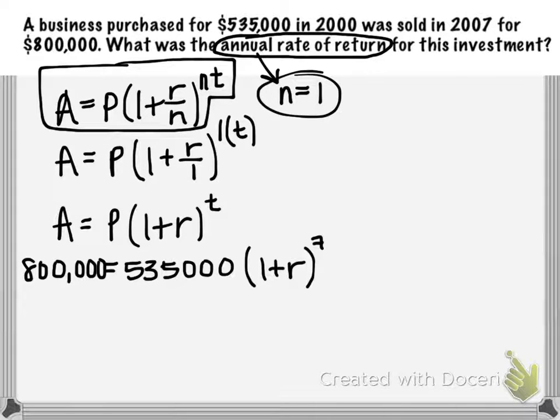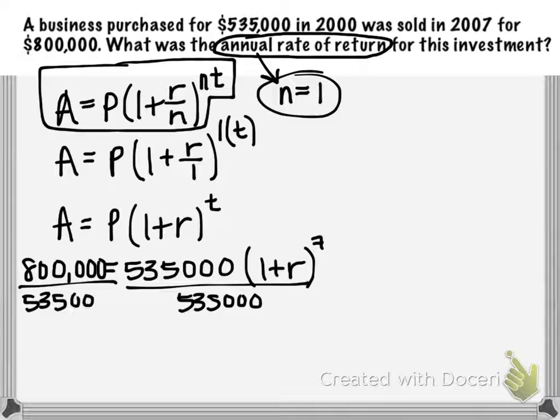We're presented with this equation to solve. We'll divide both sides by $535,000. Remember, you want to keep this value in its exact form - either an exact fraction or decimal. Using your calculator, $800,000 divided by $535,000 simplifies to the fraction 160/107. We don't want a rounded decimal here because we don't want to decrease the accuracy of our final answer.